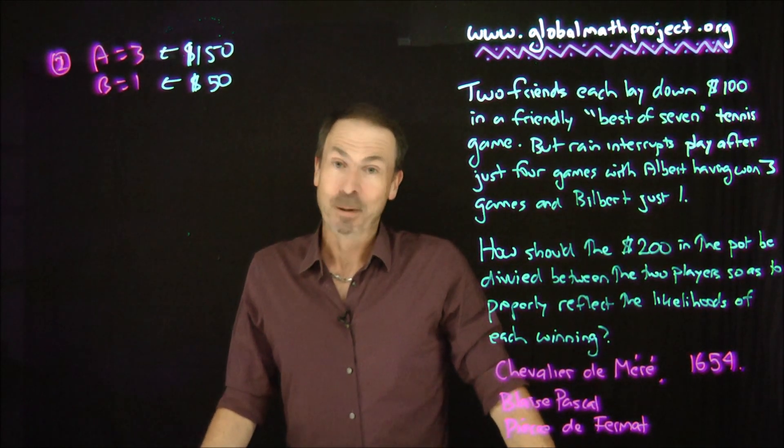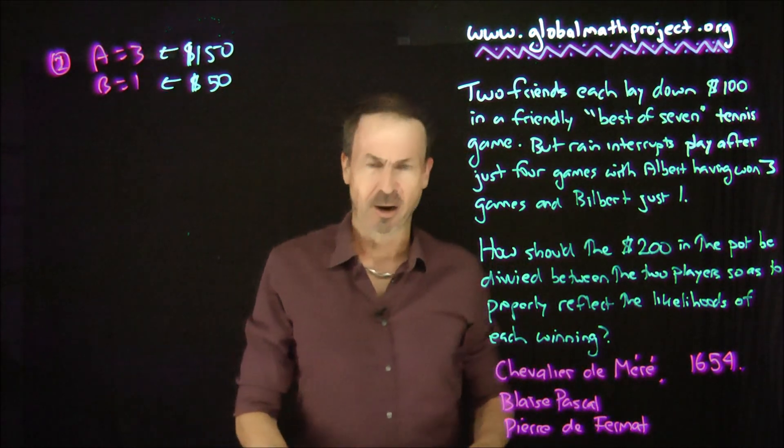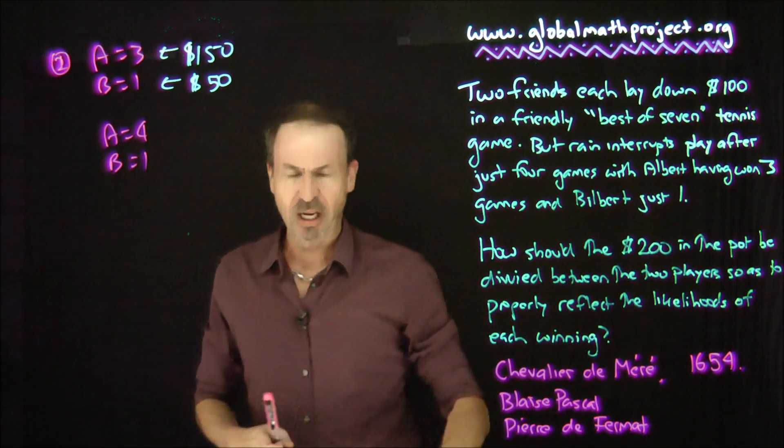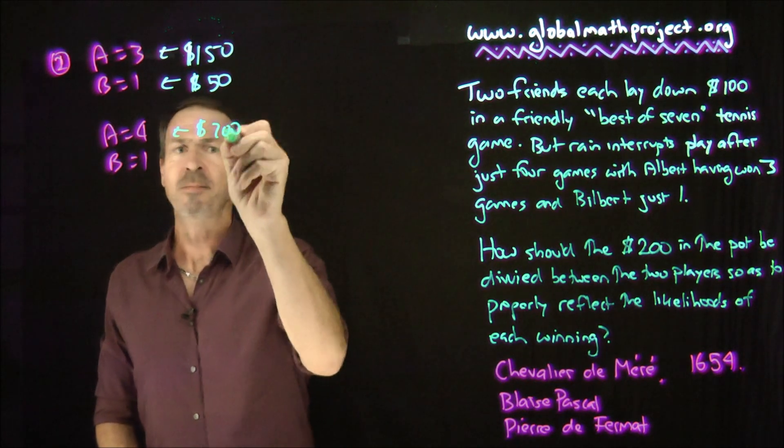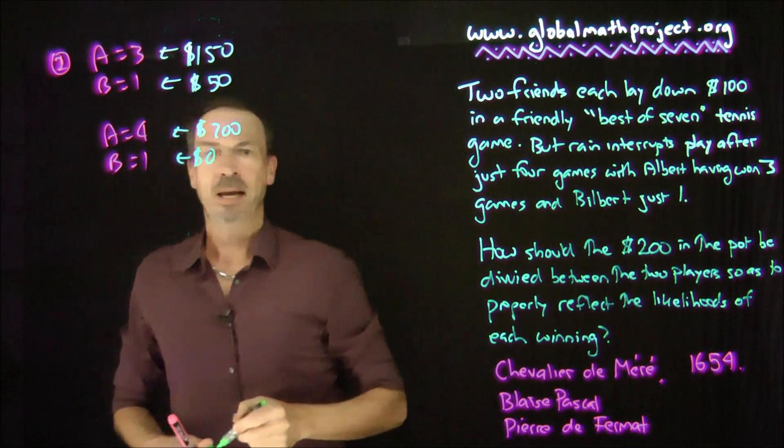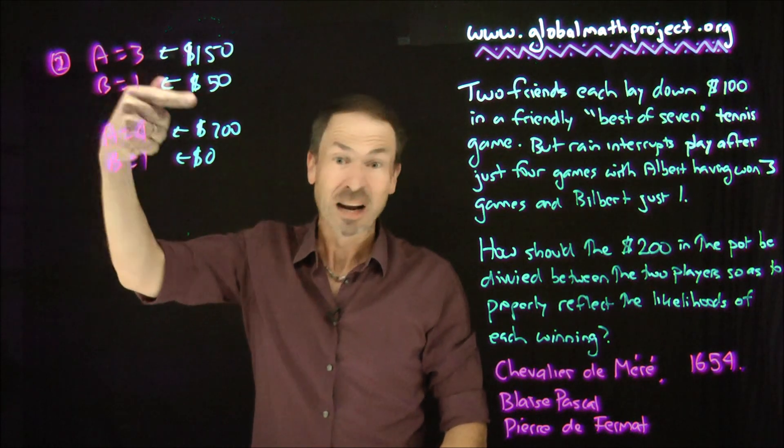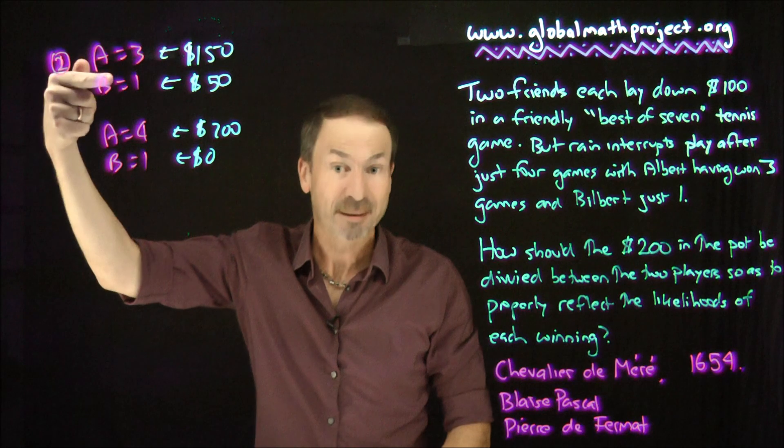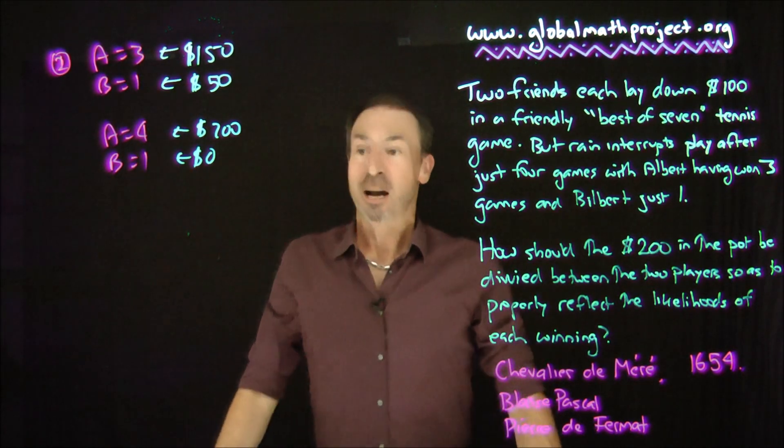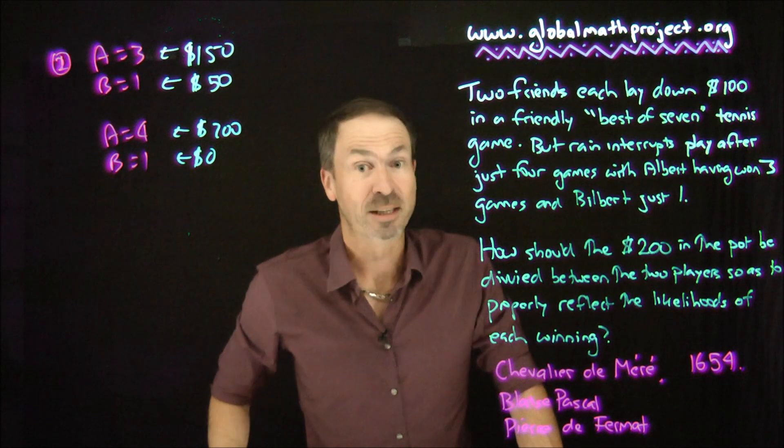But if you think about this, Albert's probably going to complain. He's going to say, hang on, I was on the verge of winning. I was about to win a fourth game. It was about to be Albert gets four and Bilbert gets one. In which case, I would get the full $200 in that situation. Four games out of seven means I've got the win, and $0 goes to Bilbert. That's what I would have earned, $200 to nothing. That's not a four to one ratio. Therefore, ratios should be irrelevant. We cannot think in terms of ratios, at least not in that naive way.